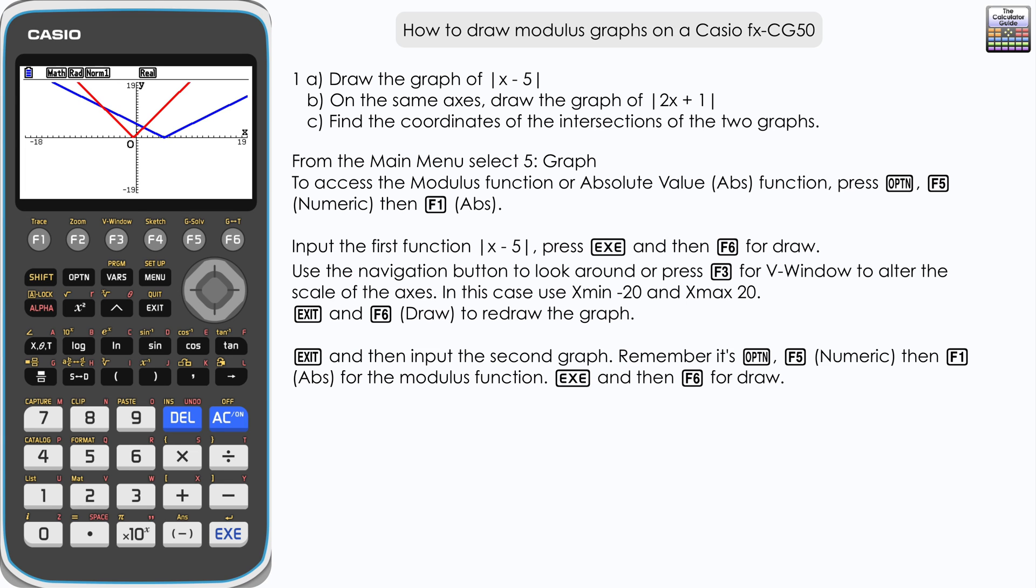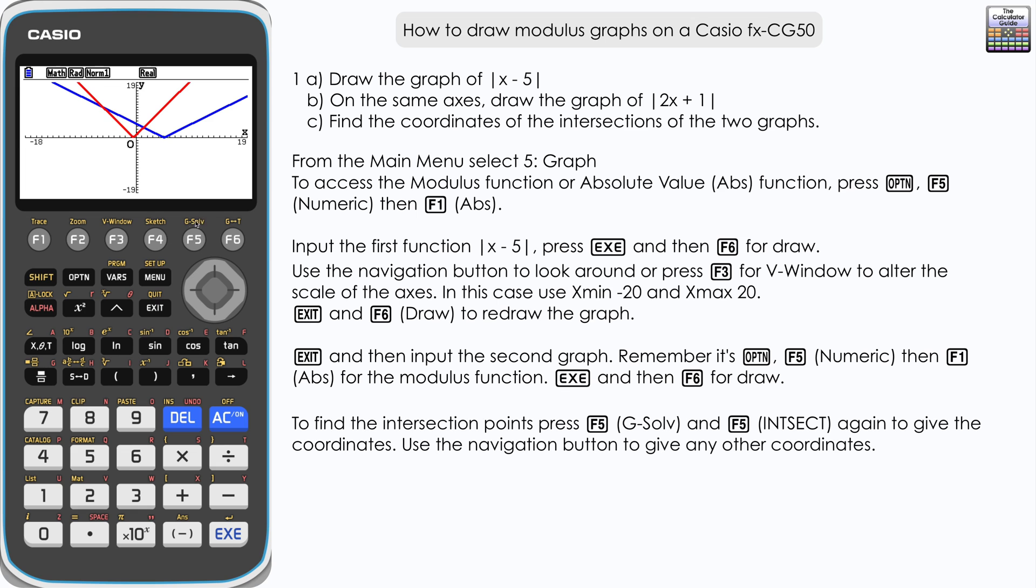You can see there are two intersection points where the two graphs cross. We can find the coordinates using the g-solve function. Press F5 and then F5 again for intersect. Here we have the coordinates of the first intersection point: negative 6 and 11.